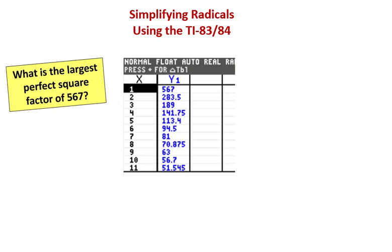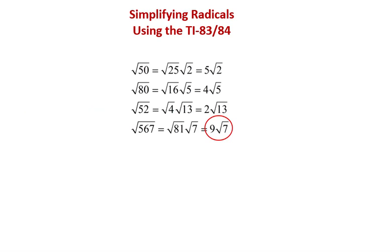Keep going down the table, and you can factor it as 9 times 63. 9 is a perfect square, but 81 was bigger than 9, so I think that's going to be our answer. Let's factor 567 as 81 times 7. Then the square root of 81 is 9, and our simplified expression — the answer — becomes 9 radical 7. So that's the way to get your graphing calculator TI-83 or 84 to help you simplify radicals.